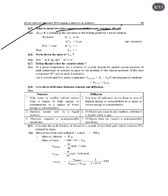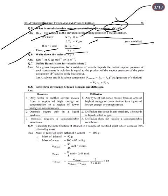Next question: What is the molal elevation constant or ebullioscopic constant, denoted KB? KB is defined as the elevation in boiling point for one molal solution. Delta Tb is directly proportional to molality M, so delta Tb equals KB times M. When M equals 1, delta Tb equals KB. Units of KB are Kelvin·kg/mol or degree centigrade per mol.